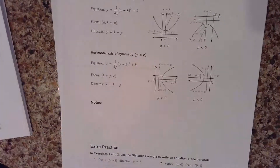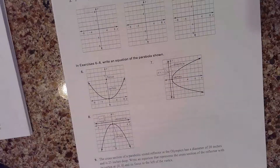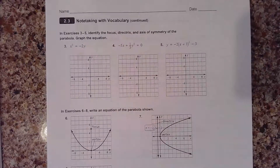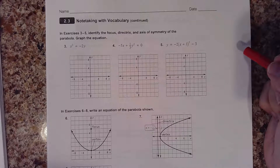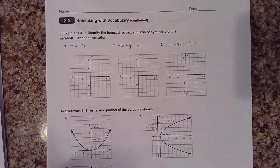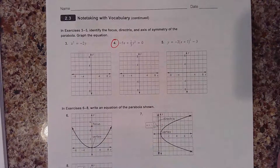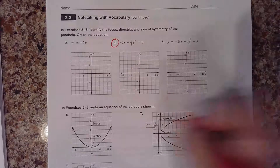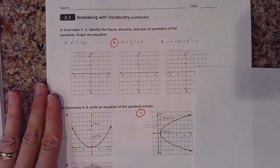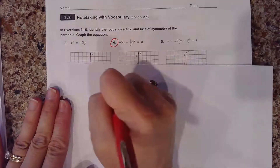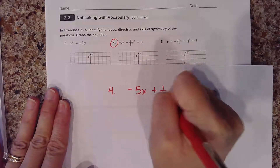Now we're going to flip to page 38. I'm going to do a couple examples with you and then save the rest for you to do on your own. So for number four, I have: negative 5x plus 1/3 y squared equals 0. Notice that the y is being squared, so this tells me that my parabola is opening left and right. The first thing I need to do is get this into the correct format — solve for x.